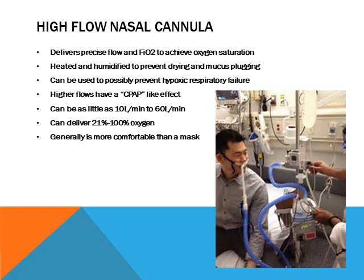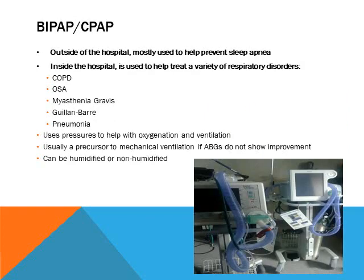High flow nasal cannulas are set up similarly to a venturi system with a blender. They can deliver up to 60 liters per minute and titrate oxygen from about 31-32 percent all the way up to 100 percent. They are more comfortable for patients who don't want to wear a mask. The gas is heated and humidified to prevent drying. High flow cannulas help prevent hypoxic respiratory failure, assist with mucus plugging in trach patients, and provide a small CPAP effect.